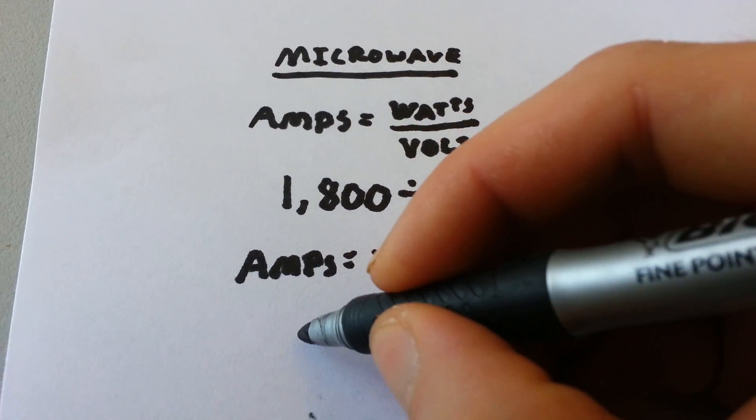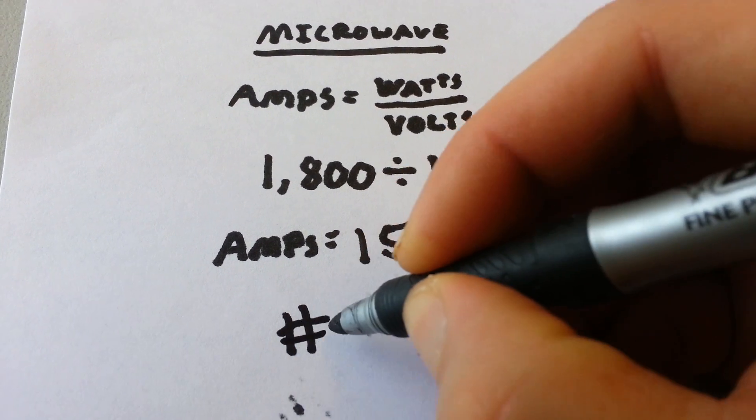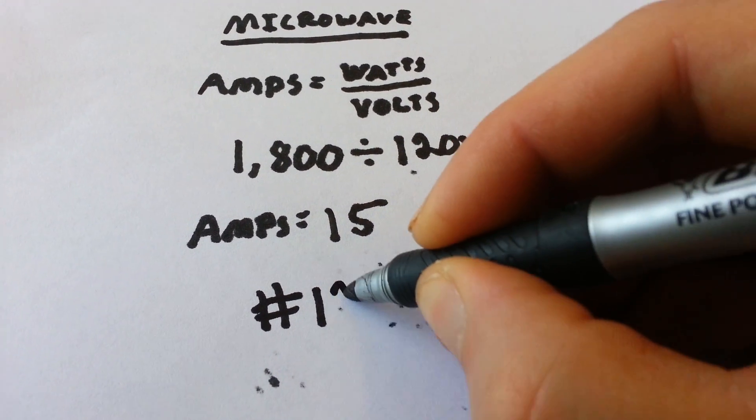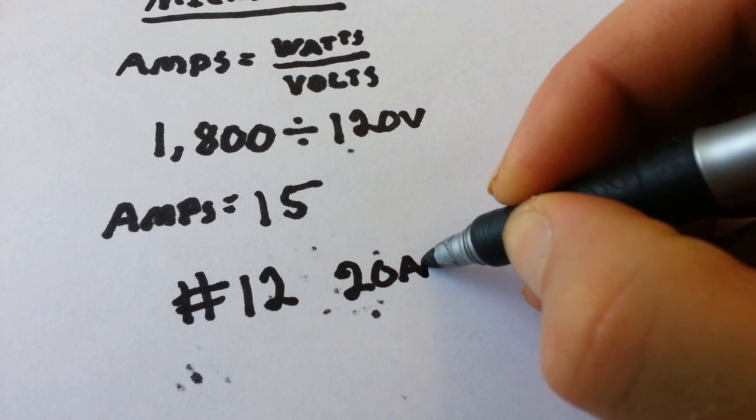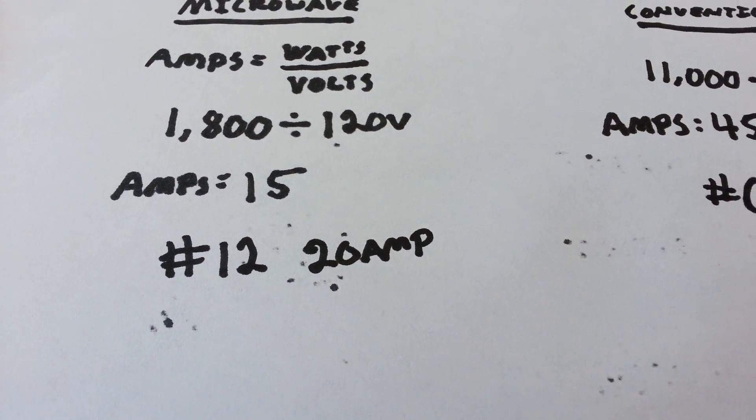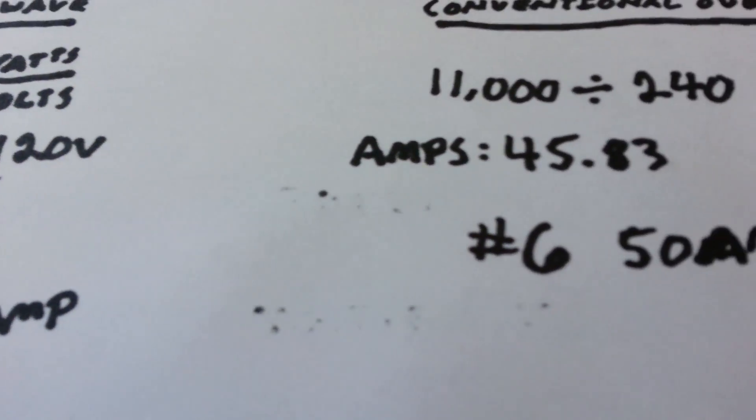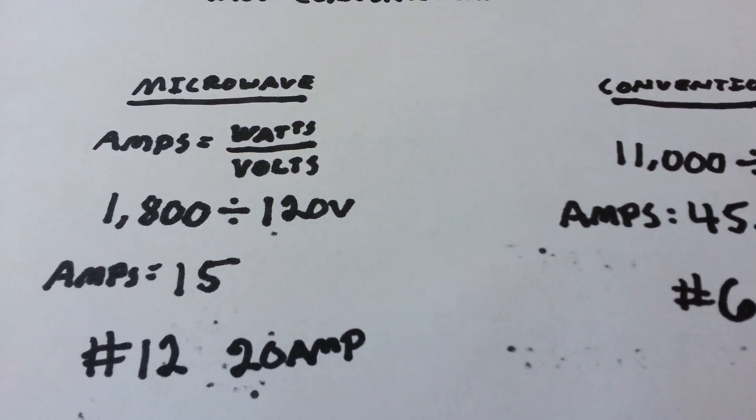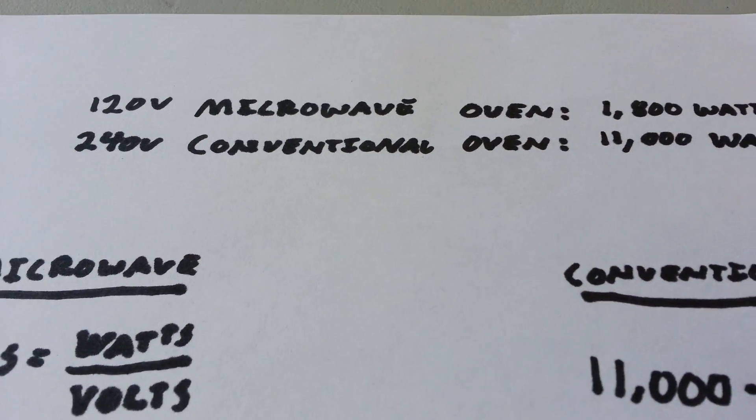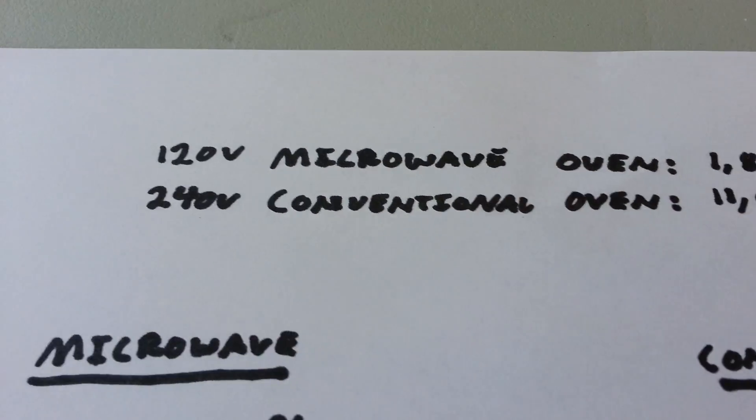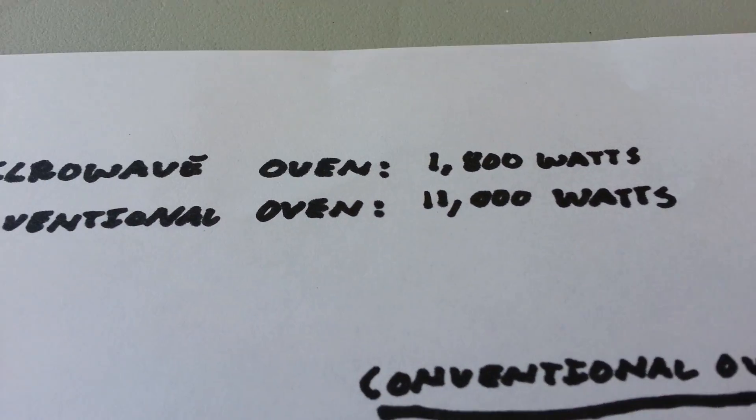For the microwave, we would run number 12, and it would be a 20 amp. And that's how it's done. It's pretty simple. It's all about looking at the equipment itself and being able to determine the voltage and the wattage.